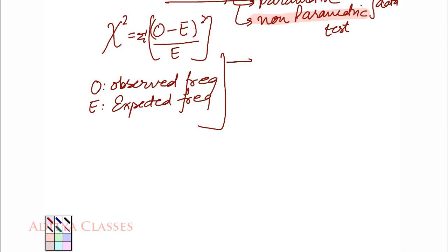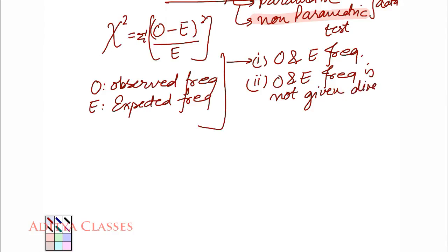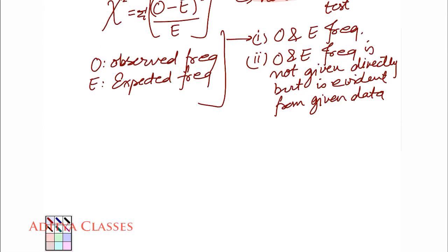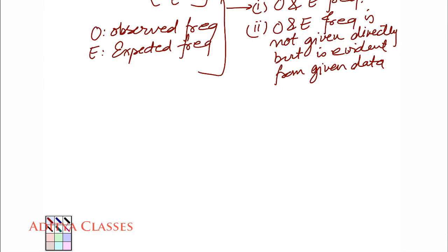For now, the questions that will be given can be given in multiple ways. First one is the simplest one where both observed and expected frequency is given. Then second one is O and E, observed and expected frequency is not given directly but is evident from the given information. When we come across such questions, you will see that it is almost evident what the observed and expected frequency should have been.